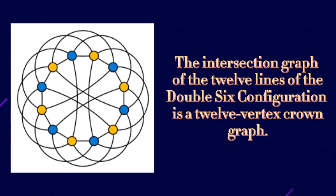The intersection graph of the 12 lines of the double six configuration is a 12-vertex crown graph, a bipartite graph in which each vertex is adjacent to five out of the six vertices of the opposite color.